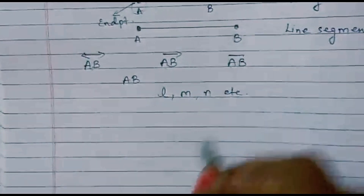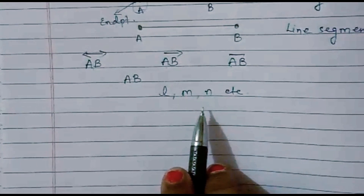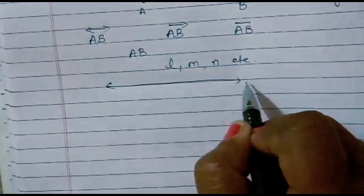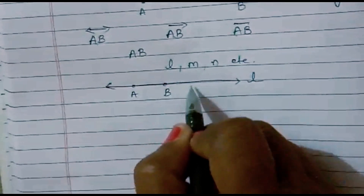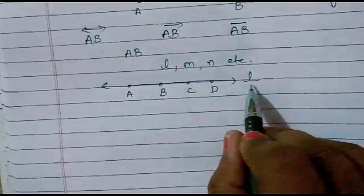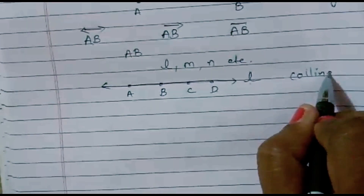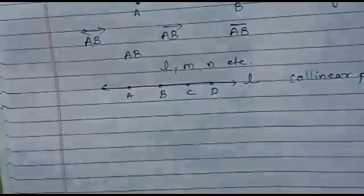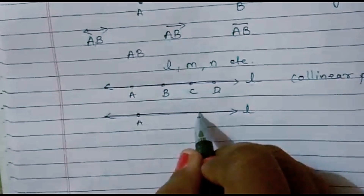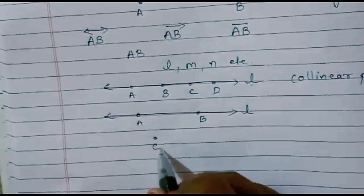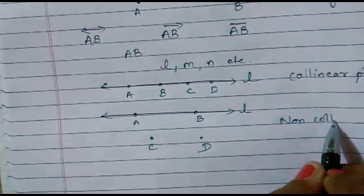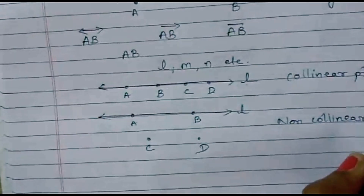If three or more points lie on the same line, they are called collinear points. Suppose I have line L with points A, B, C, and D all on the line — these points are called collinear points. On the other hand, if points are not on the same line — for example, if A and B are on line L but C and D are outside the line — then they are called non-collinear points.